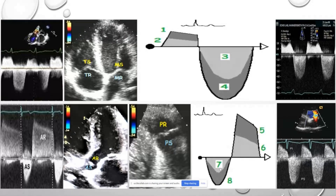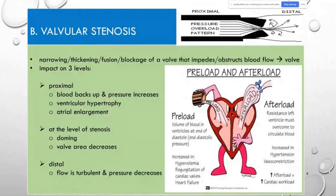Stenosis is defined as a narrowing, thickening, fusion, or any type of blockage of a valve that stops blood from flowing properly. The valve is affected in three areas: proximally, at the level of actual stenosis, and distally. Proximally, blood backs up and pressure builds. For example, with aortic stenosis the patient would develop ventricular hypertrophy because the heart tries hard to pump out blood, but since the valve isn't opening, the muscle thickens.